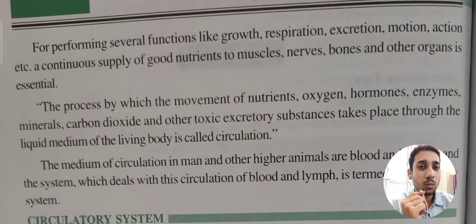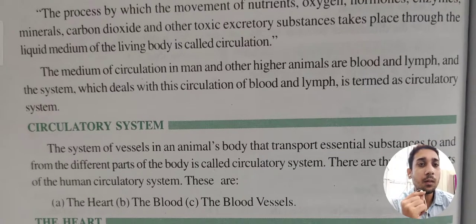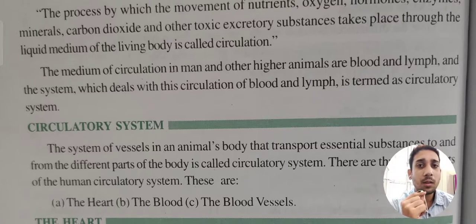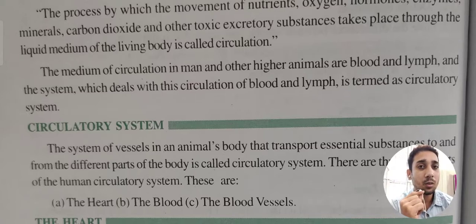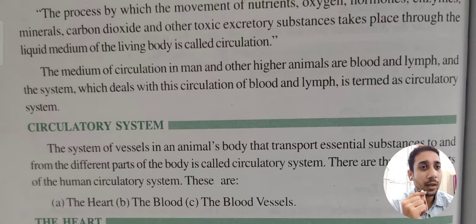These substances move through a liquid medium, and that medium is blood. The medium of circulation in man and other higher animals is blood and lymph. The system which deals with the circulation of blood and lymph is called the circulatory system. Through blood or lymph, nutrients and other materials are transferred.